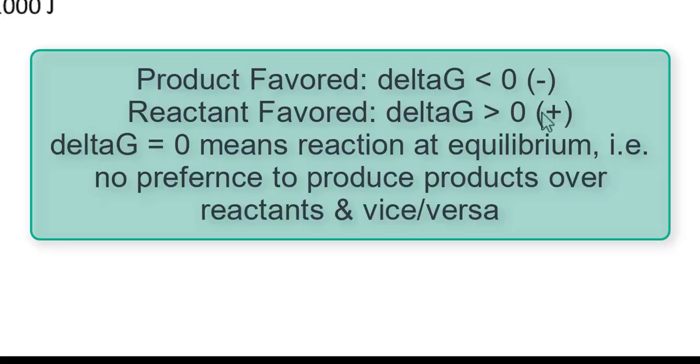In other videos, we use delta S universe to determine if a reaction was product-favored or reactant-favored. We could also use the change in Gibbs free energy, or delta G, to determine if the reaction is product or reactant-favored. A negative delta G is associated with a product-favored reaction.